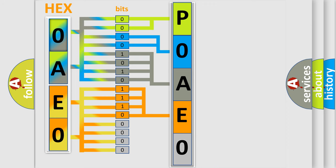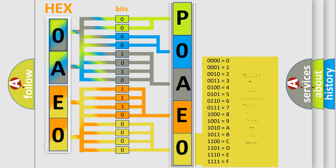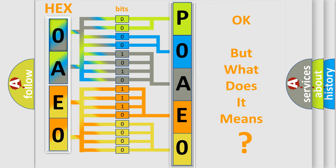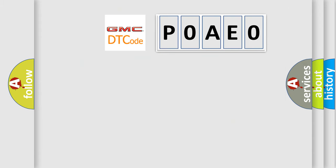A single byte conceals 256 possible combinations. We now know in what way the diagnostic tool translates the received information into a more comprehensible format. The number itself does not make sense to us if we cannot assign information about what it actually expresses. So, what does the Diagnostic Trouble Code P0AE0 interpret specifically for GMC car manufacturers?